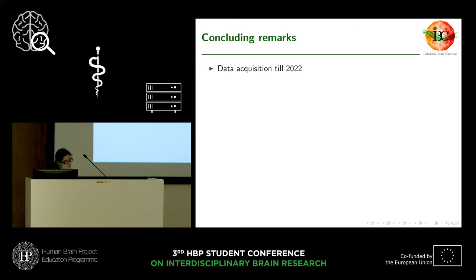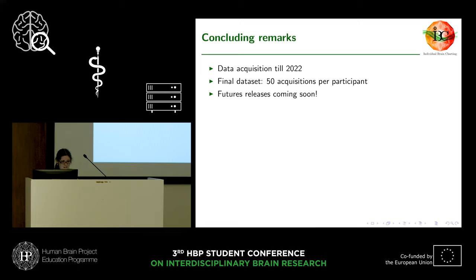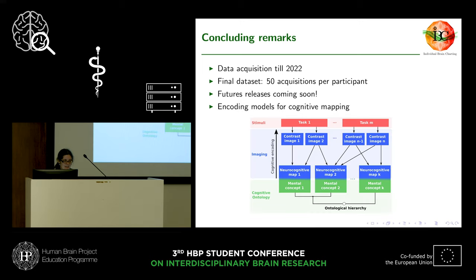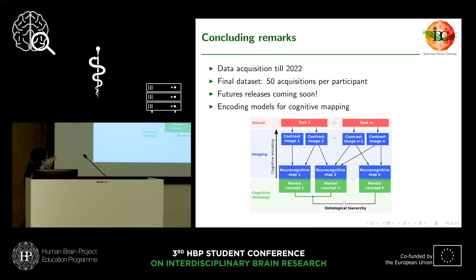The data acquisition will continue until 2022, and the final dataset will have 50 acquisitions. Future releases will come soon, especially tackling the visual processing system as the next one. The ultimate goal of the dataset is to develop encoding models for cognitive mapping that can be implemented in brain atlas infrastructure like HCP, and one of the major challenges is the development of a cognitive ontology based on neuroimaging data.